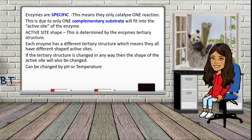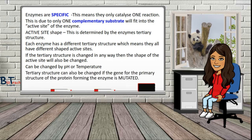When you did your GCSE studies, you would have learned about factors affecting enzymes, and pH and temperature are two of those factors. The tertiary structure can also be changed if the gene for the primary structure that codes for the protein is mutated. You'll learn more about this when we look at protein synthesis.